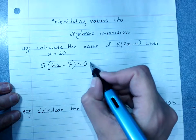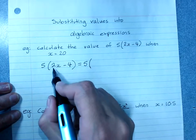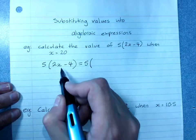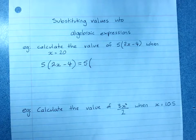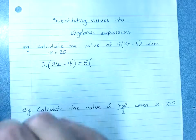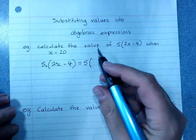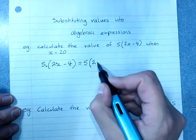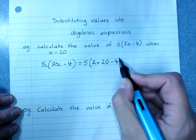So this will be 5 outside of, which has an invisible times. Now 2x means 2 times x. You'll remember that 2x has an invisible times sign. There's an invisible times sign when there's a number outside brackets as well. So you've got to put the times sign back in, 2 times 20 minus 4.